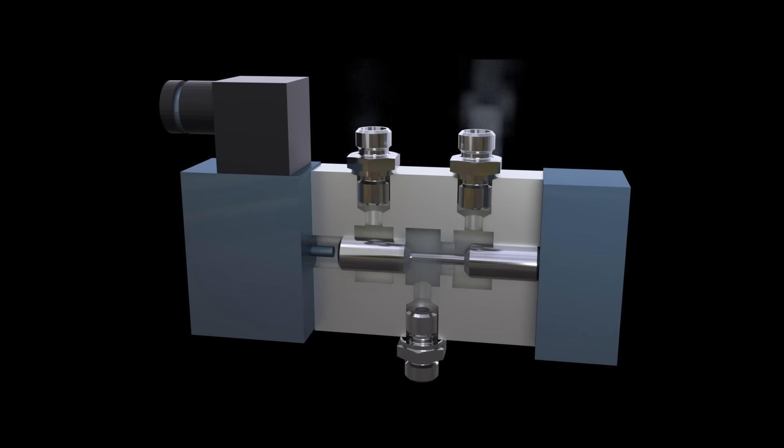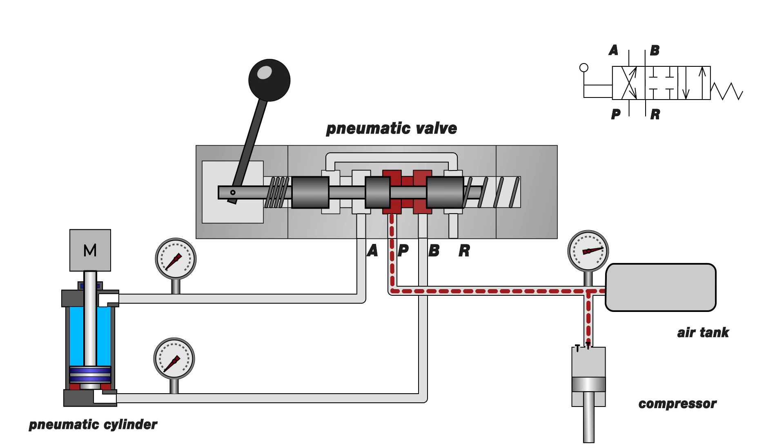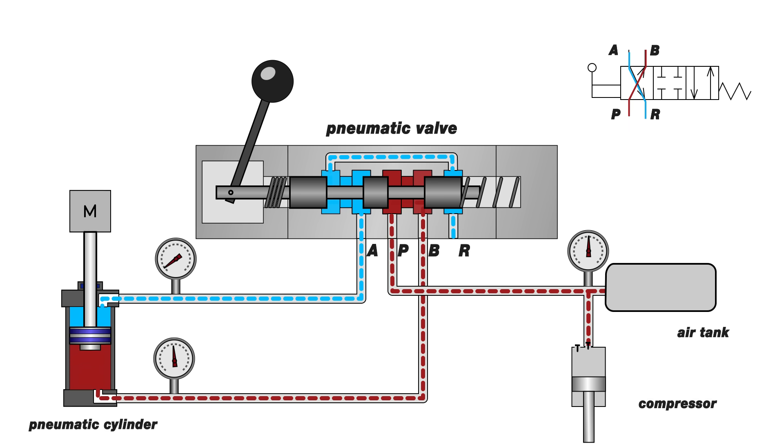Let's consider the operation of the pneumatic system as a whole. Air moves from the compressor to the valve, which is locked in the neutral position. When switching the valve, compressed air will move from the compressor to the piston cavity, and the rod cavity will connect to the atmosphere. The rod will extend.